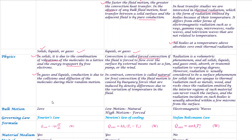Radiation is volumetric in nature — it is thermal radiation due to temperature difference. But we consider it as a surface phenomenon for solids. Radiation is a surface phenomenon. Convection involves bulk fluid motion — natural convection and forced convection. Radiation is an electromagnetic wave.